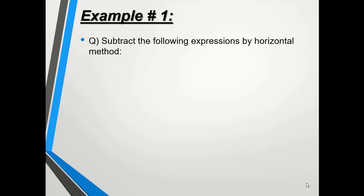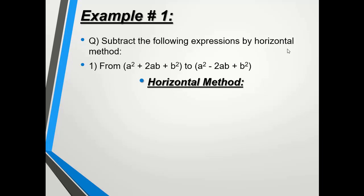Example number one: subtract the following expressions by horizontal method. We have two expressions — the first is a² + 2ab + b², and the second is a² - 2ab + b² — and we are asked to subtract both expressions by horizontal method. Horizontal method means solving two or more expressions in a single row.